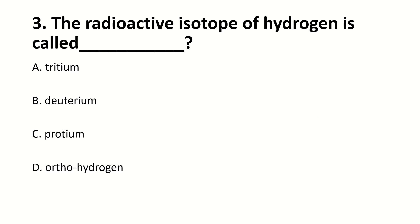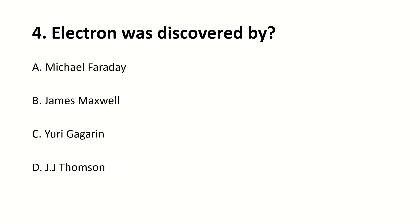The radioactive isotope of hydrogen is called? The answer is A, tritium. Electron was discovered by? The answer is D, J.J. Thomson.